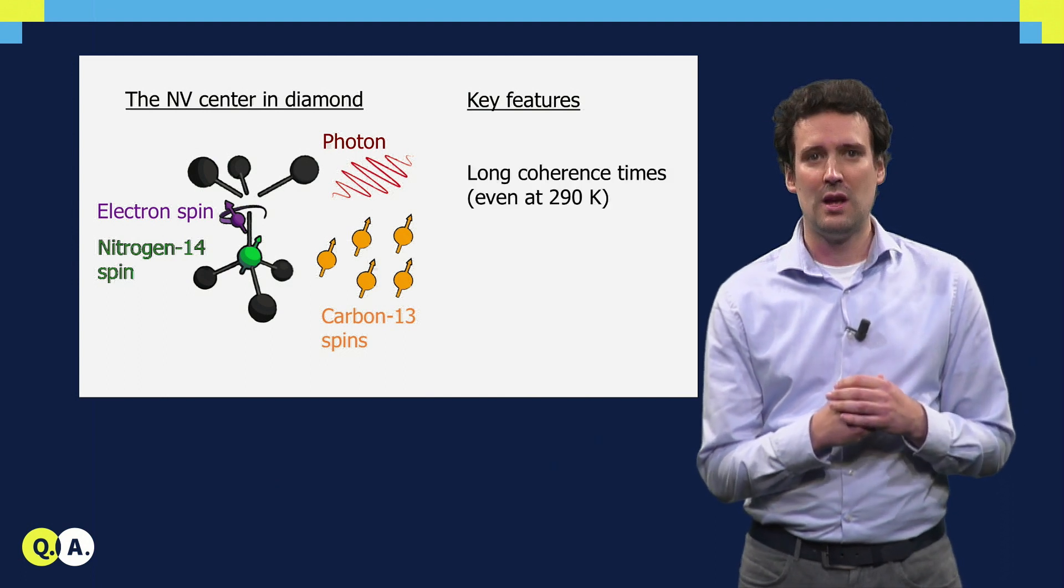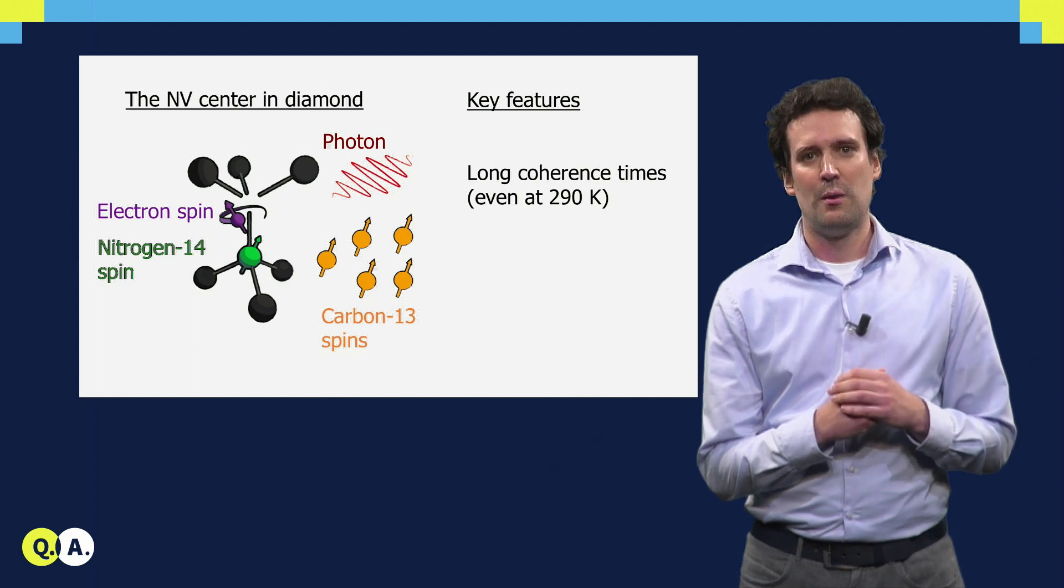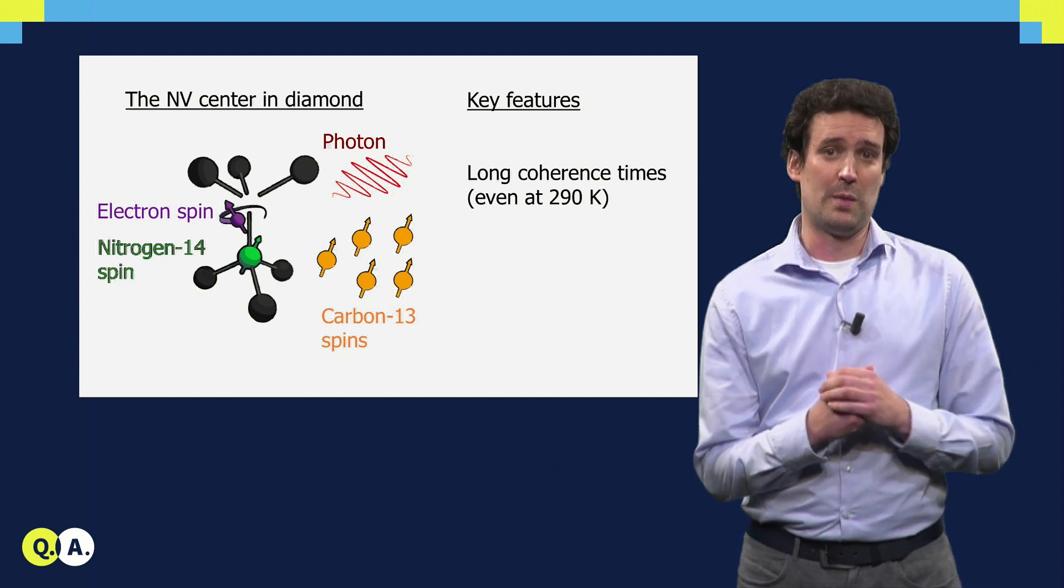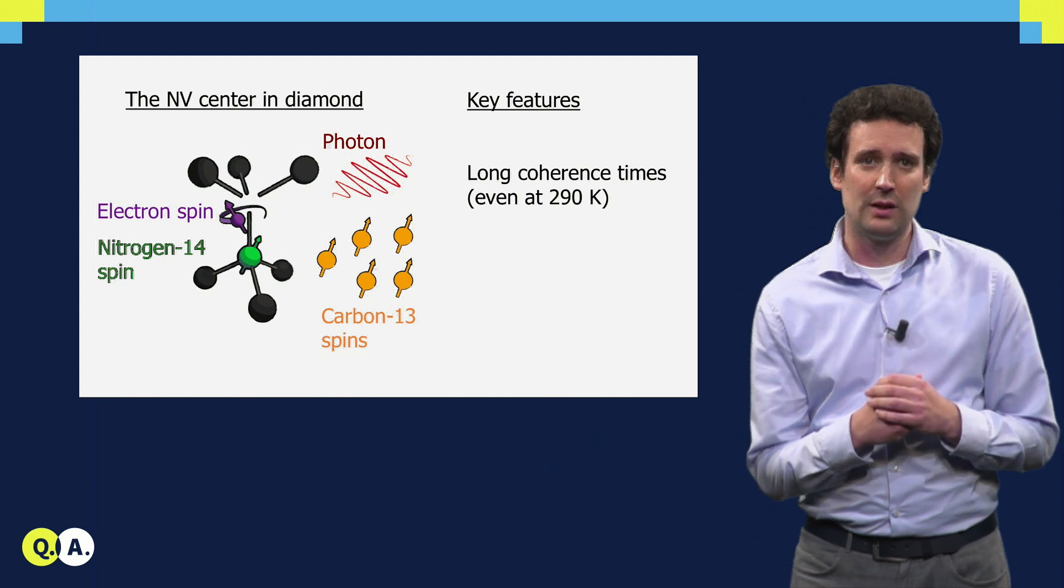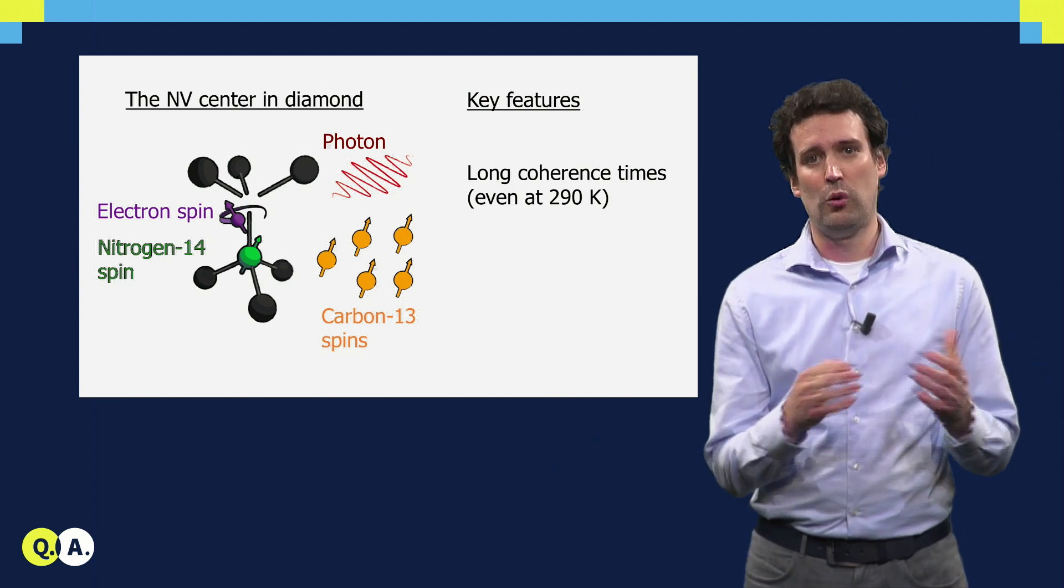First, the electron spin has a very long coherent time, even up to seconds, which means that we can control it as a good qubit, and quite remarkably, this qubit can even work in a large range of temperatures, all the way up to room temperature.